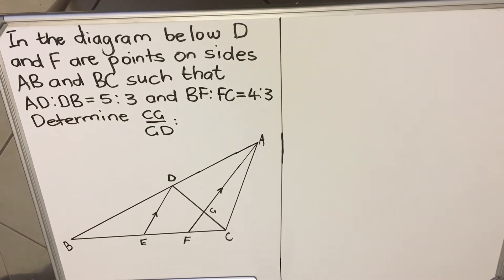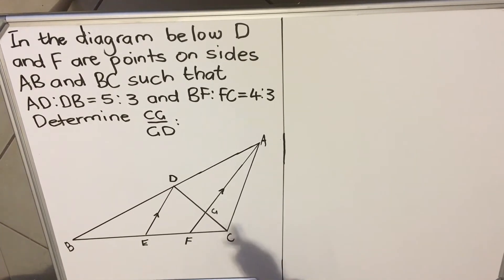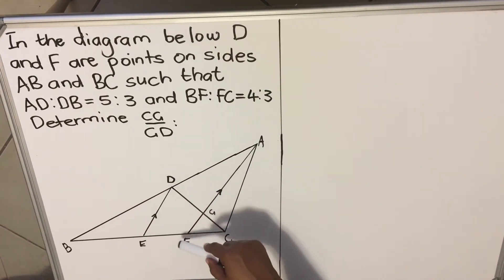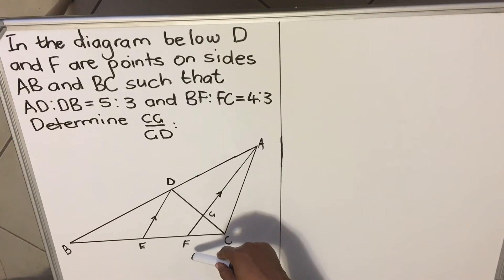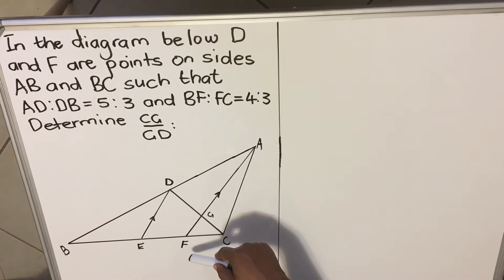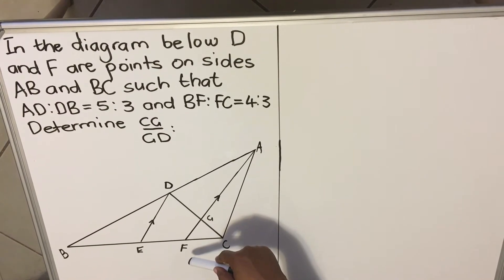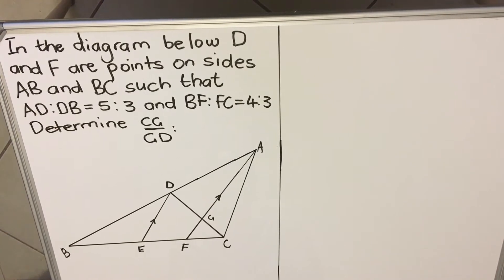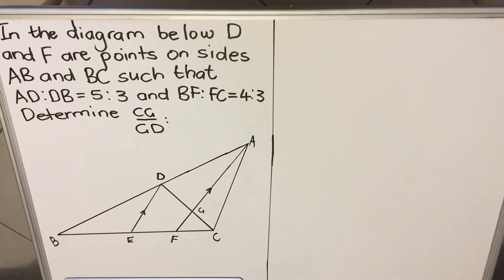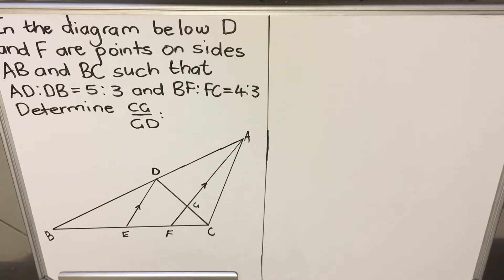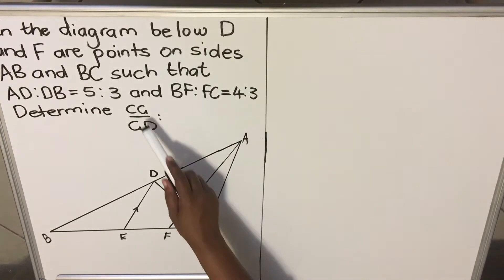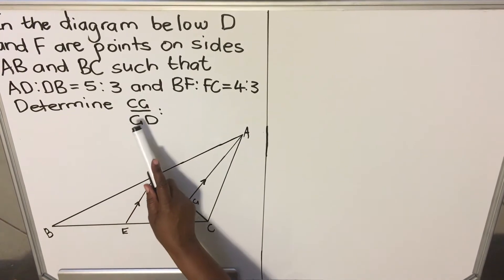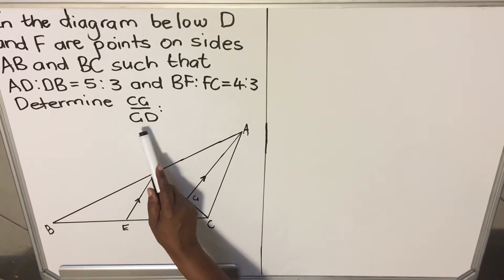Let's look at what we are asked. We are given a diagram and then we are given an instruction. In the diagram, D and F are points on sides AB and DC such that AD is to DB — this is another way of writing a ratio — equal to 5 is to 3, and BF is to FC equal to 4 is to 3. We are asked to determine the ratio CG over GD.